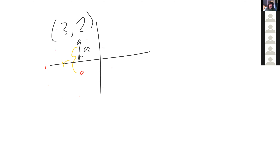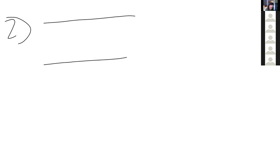Let's move on to problem two. This is a boat crossing a river problem — a really common exam question because it's medium difficulty. We'll sketch out the river. The river is flowing due east with a uniform speed of 2.4 meters per second.